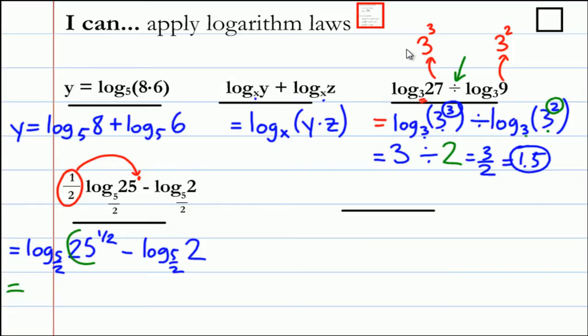But let's first deal with this log. 25 to the one half is the same as the square root of 25, which is just 5. For the next step: log base 5 over 2, and we can combine these two terms to be one term now: 5 over 2.